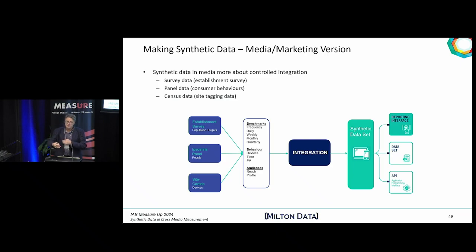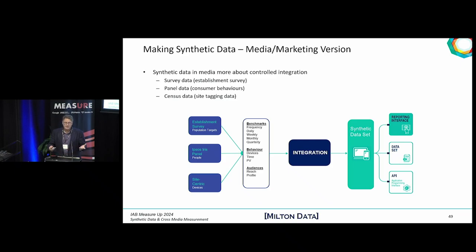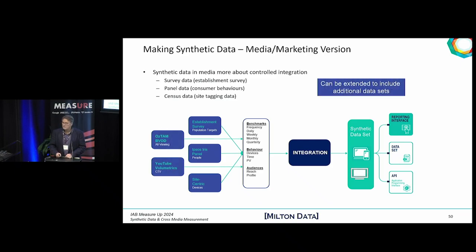In Australia, we have over 500,000 pseudo-individual synthetic people used to give a high degree of fidelity in finely grained audience measurement within the Ipsos IRIS service. But more importantly, apart from reporting on those core elements, we have a framework which allows integration with the Oztam datasets of BVOD and more recently access to Google Online.